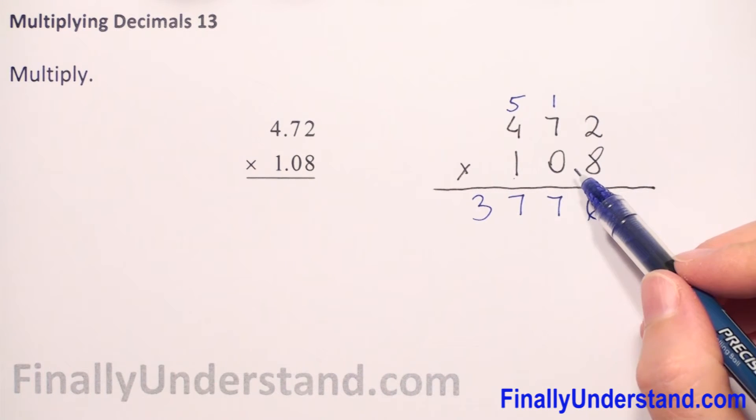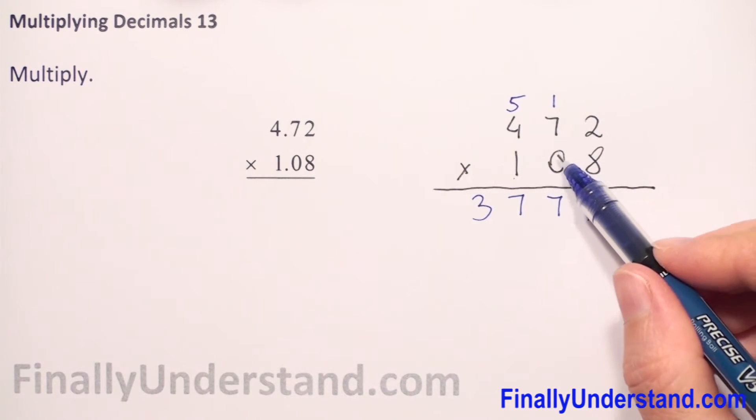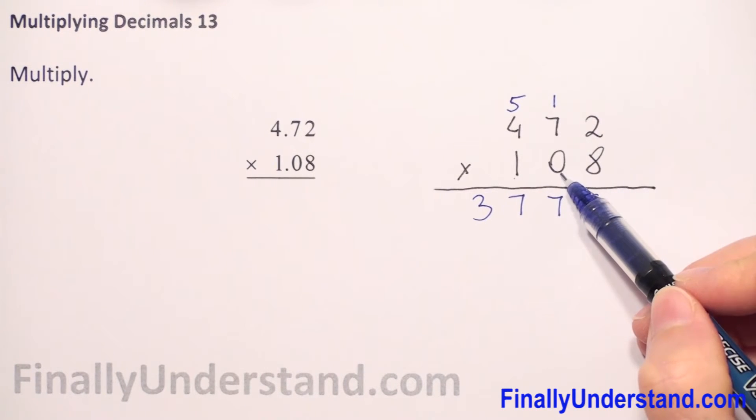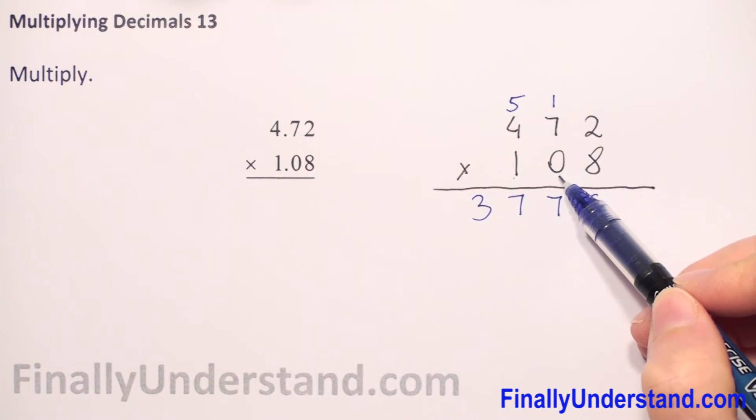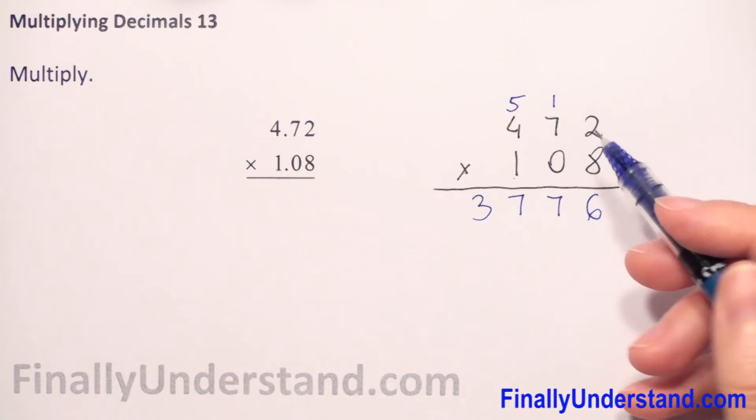And now we have to multiply every number in the first row by 0 but when we multiply by 0 we will have 0 so we don't have to do. So we go to next.